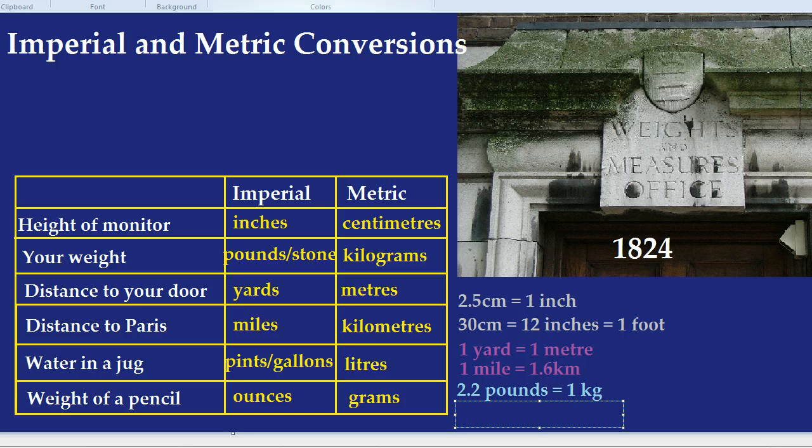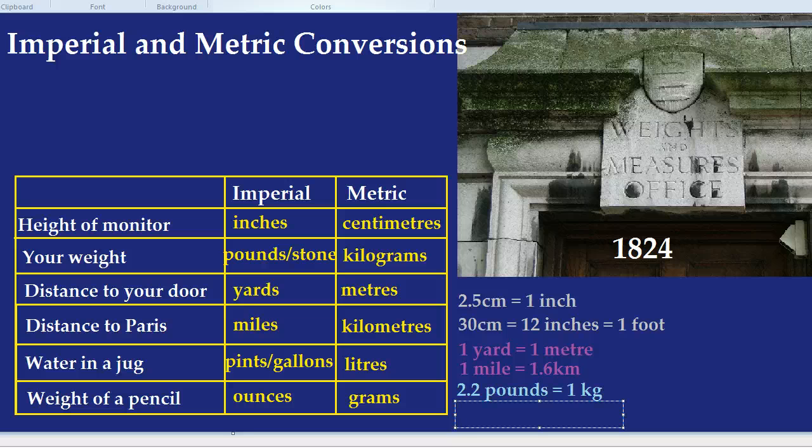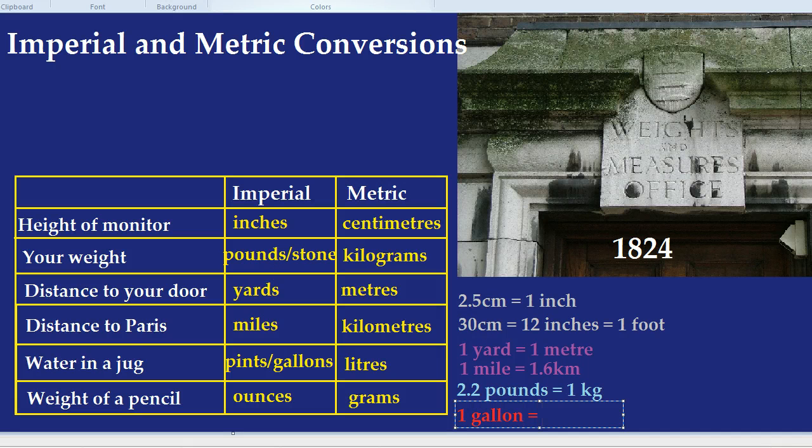Gallons and litres. Always good to know if you're planning to drink a gallon of water, which I wouldn't recommend. One gallon equals 4.5 litres.